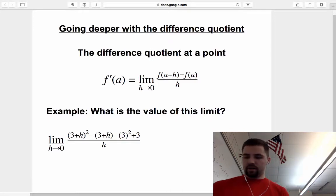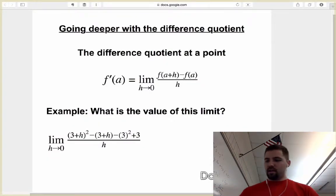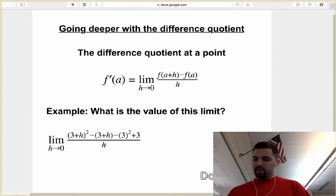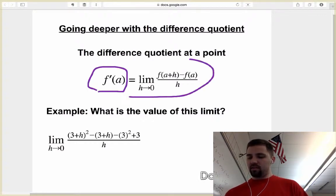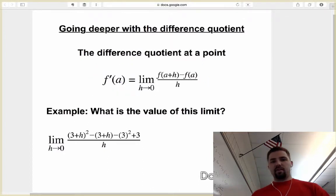So what I've given you here is the definition of the difference quotient, but remember that there's this part over here, there's this f prime of a, that's what this limit is equal to. So that's something that I think we often forget.